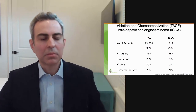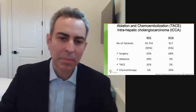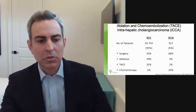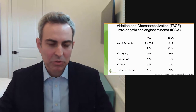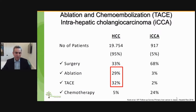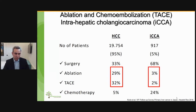Before we dig into the two modalities we're going to discuss today, I want to draw a parallel between hepatocellular carcinoma and intrahepatic cholangiocarcinoma regarding the use of local regional therapies. This is a Japanese survey from 2016. As you can see, ablation and chemoembolization combined are utilized in approximately 60 percent of patients with hepatocellular carcinoma, whereas comparing with intrahepatic cholangiocarcinoma, the number of patients who receive such local regional therapies is significantly lower.